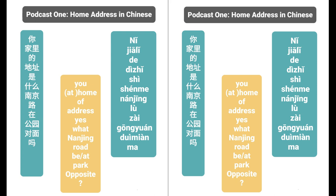Can you say it again? 三百二十九号 — meaning 329. Very good. So 我家里的地址是... the name of the street, 南京路, 一百三十五号. My home address is number 135, Nanjing Road.